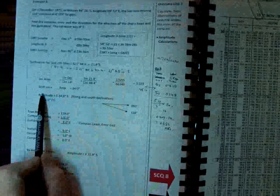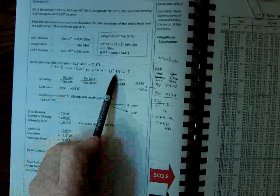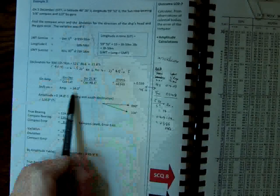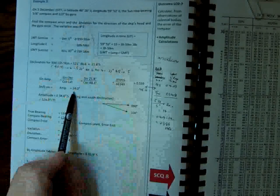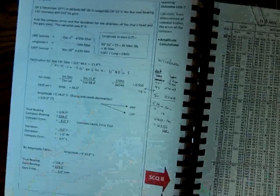Now to find the amplitude, sine of amplitude is sine dec over cos lat. So it'll be sine 21 degrees 45 over cosine of 48 degrees 26. And you'll get a value of 34 degrees for the amplitude.